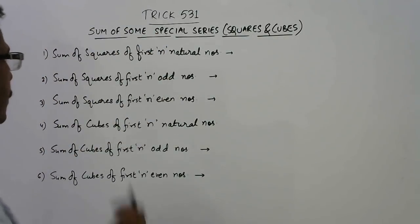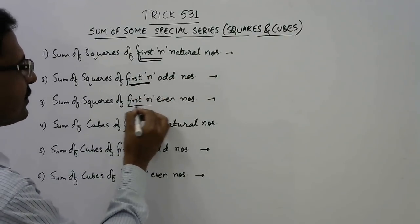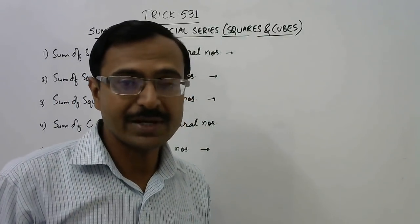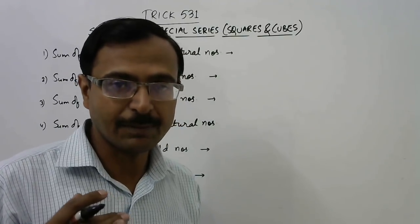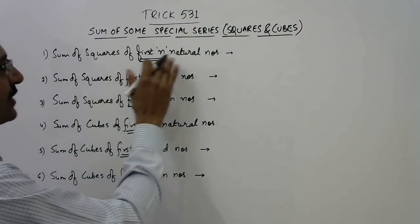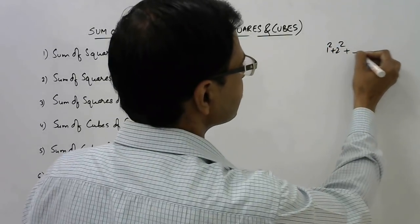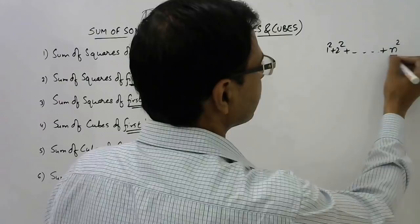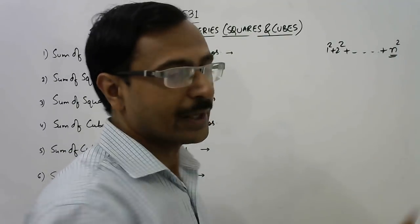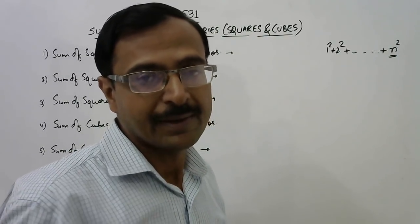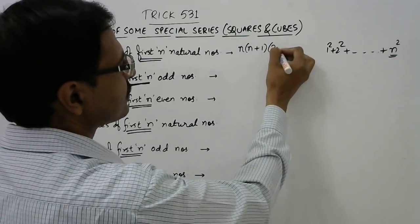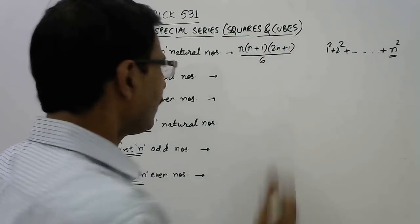Every series I am taking starts with one — if it is sum of squares then one square will be the first term, if it is sum of cubes then one cube will be the first term. If you want to find the sum of squares of first n natural numbers, that is 1² + 2² up to n², you just substitute the value of n in the formula: n(n+1)(2n+1)/6. I am sure this is a very common formula and most of you already know it.